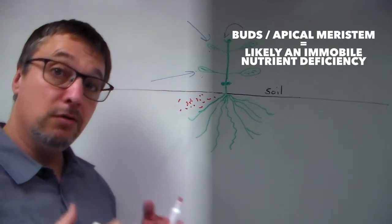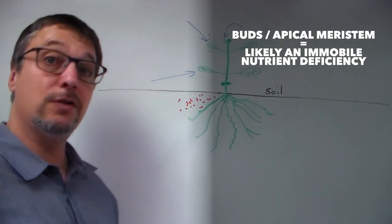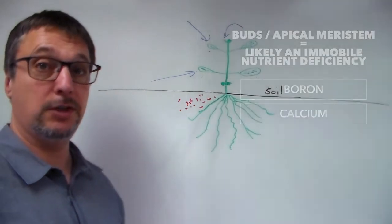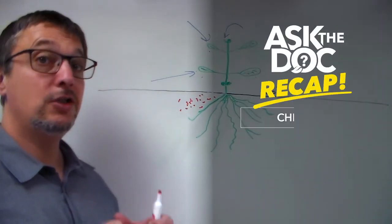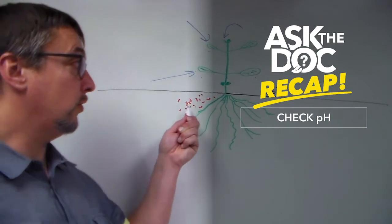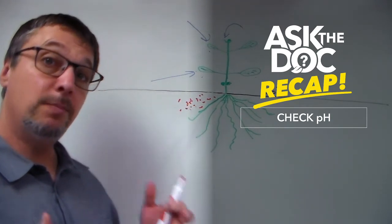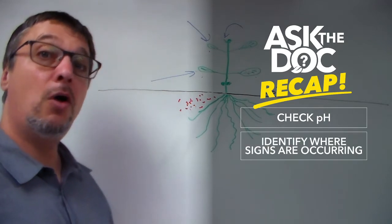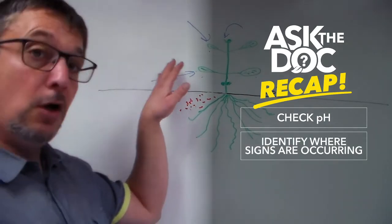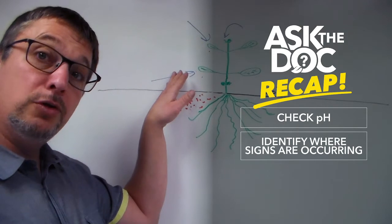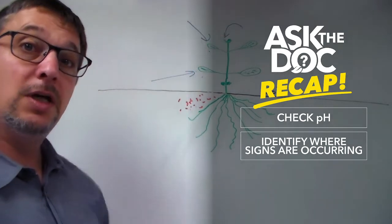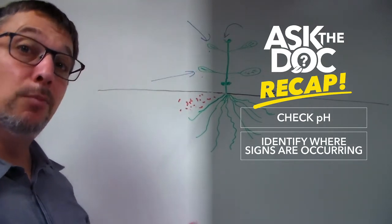So if you think you have a nutrient deficiency, check the pH. Maybe the nutrients are available in the solution, the plant just can't absorb them. If the pH is okay, then look on the plant where they're occurring. Lower leaves means you have a mobile nutrient deficiency. If it's the new leaves or the buds, that means you're going to have an immobile nutrient deficiency.